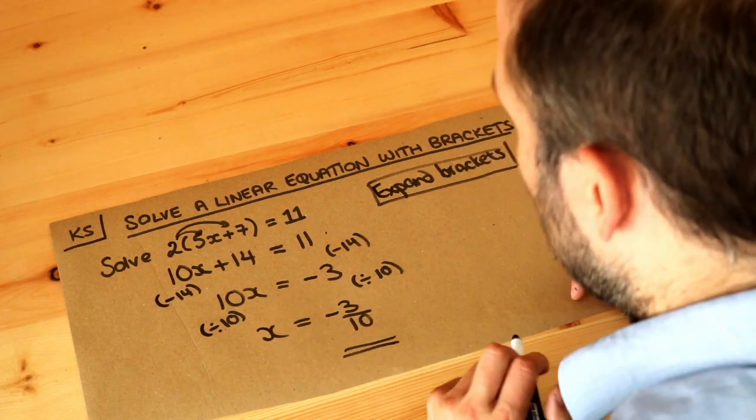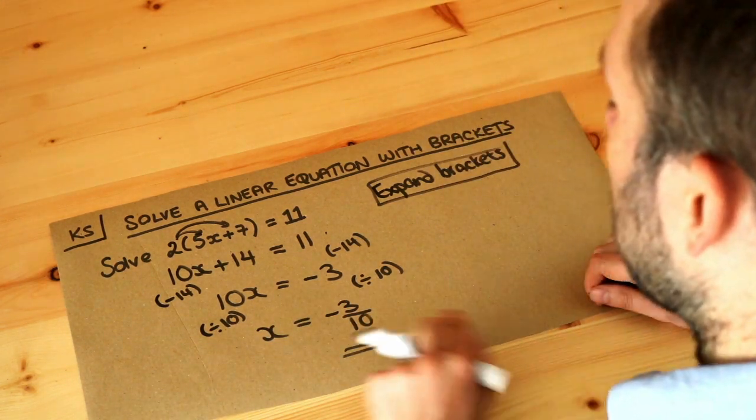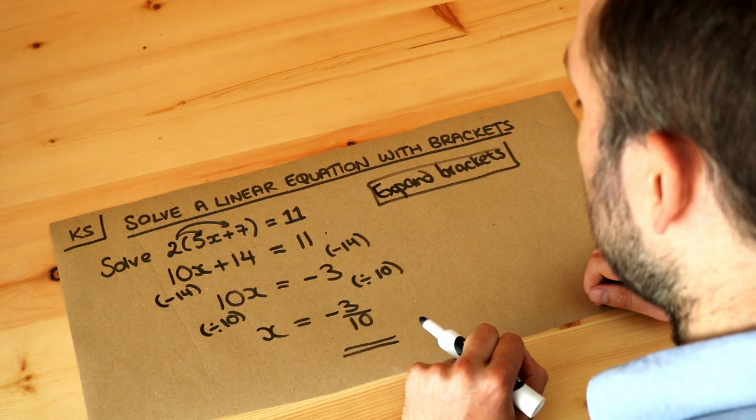You could convert that to a decimal—that's -0.3—but in algebra I prefer to leave answers as fractions anyway.